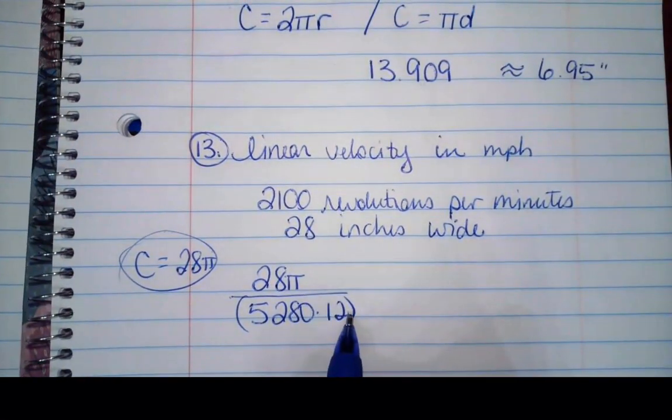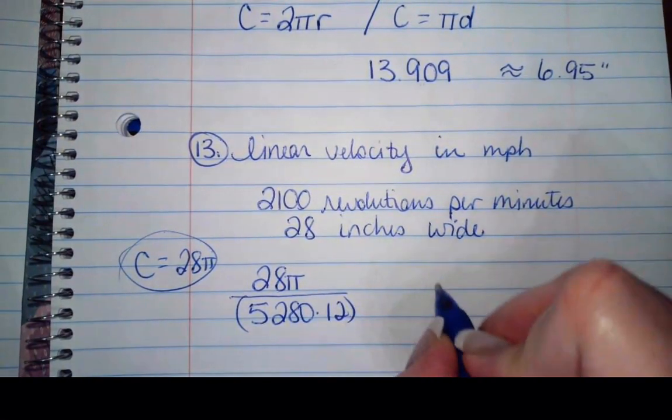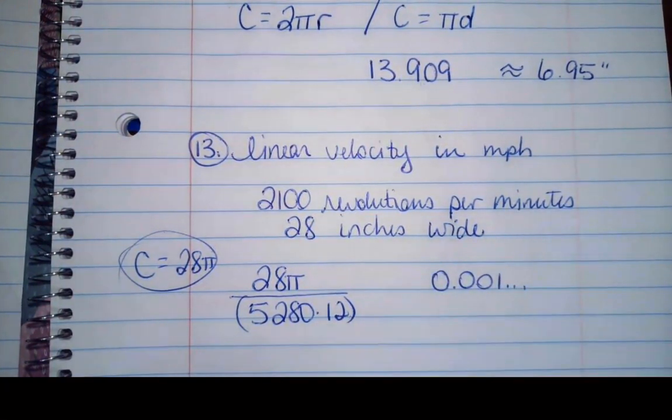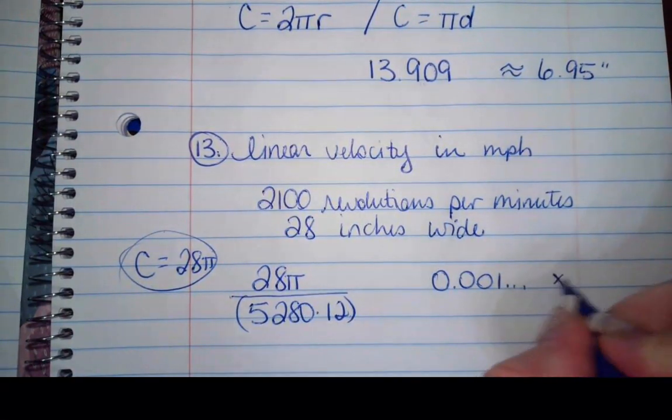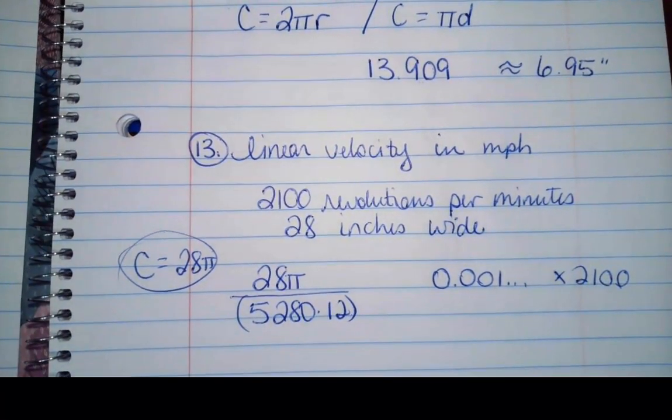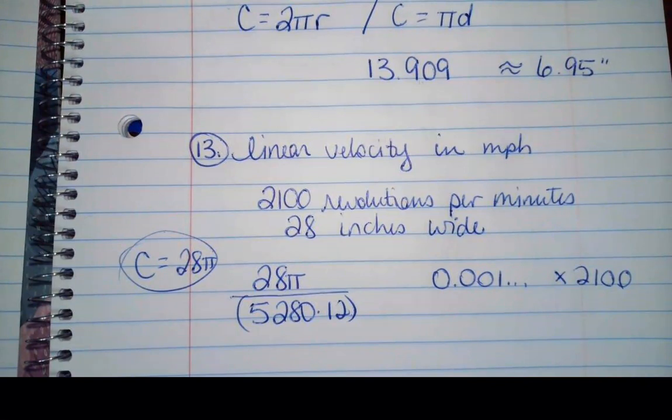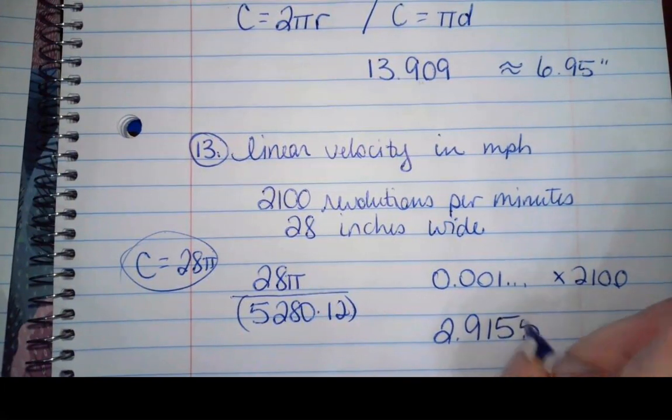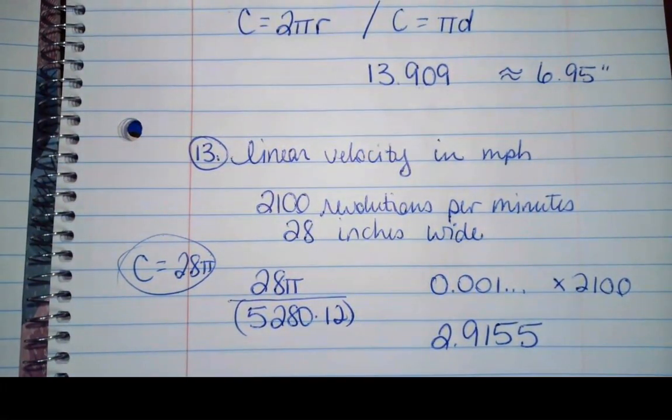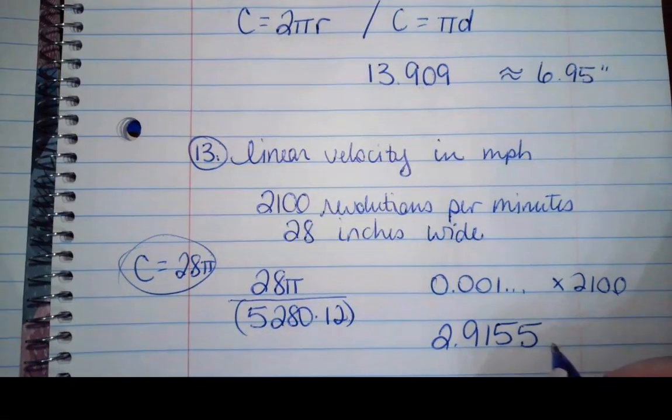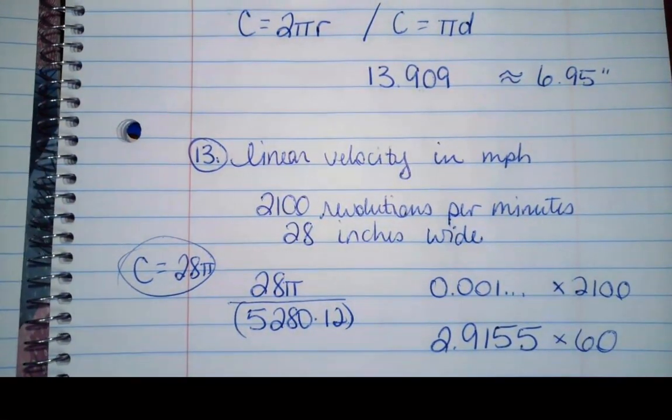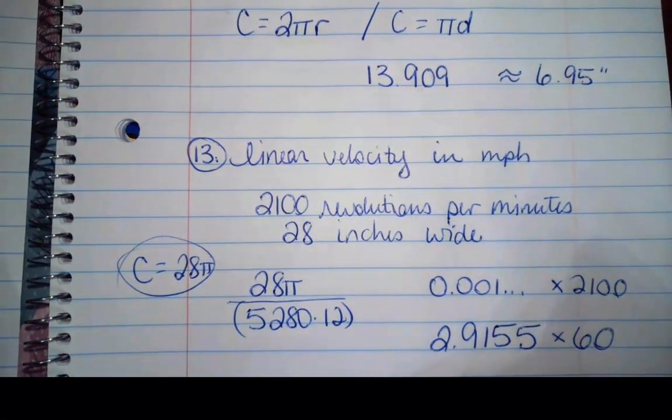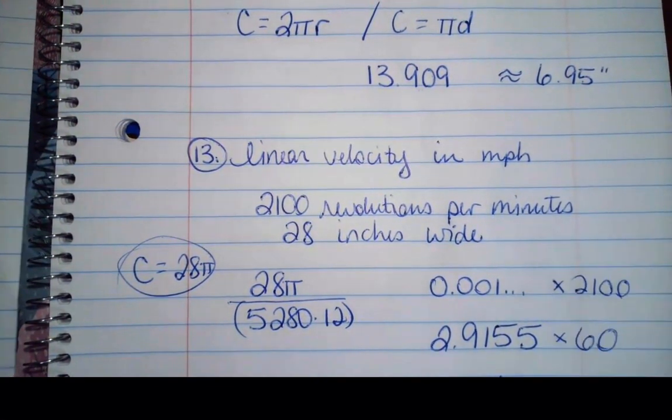So that's going to give me a very small number of 0.001 and so on. Well, how many times is it doing that? It's doing it at 2,100 revolutions. So that multiplied together gives me 2.91545. But remember that this is still in minutes. So we've got to multiply that by 60. And that's going to give us an answer of 174.93.